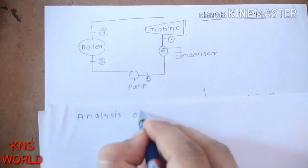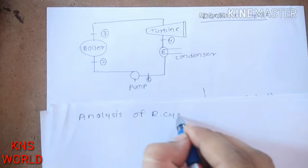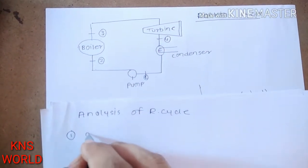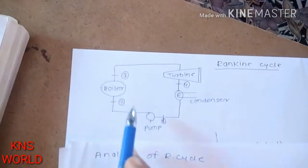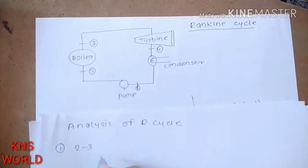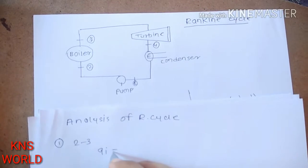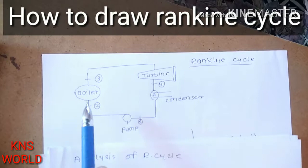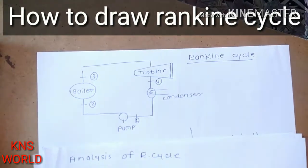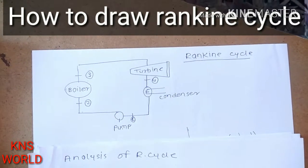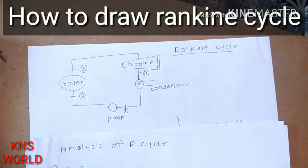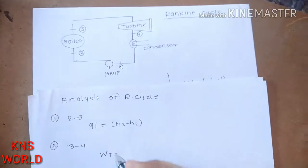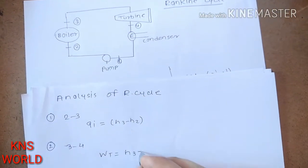For the analysis of the Rankine cycle: process two to three is the boiler, where heat supplied Q equals H3 minus H2, because the boiler increases temperature. Process three to four is the turbine, where turbine work equals H3 minus H4.